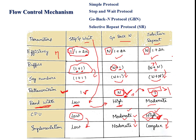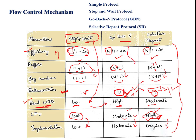These are the comparisons, and based on these parameters we can choose the appropriate protocol for different applications. Stop-and-wait may be useful when the bandwidth of the channel is less and few packets are transmitted. When the bandwidth of the channel is high, we can go for go-back-N. Based on requirements, we can select any of these protocols.